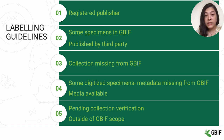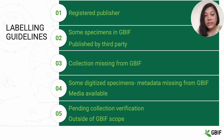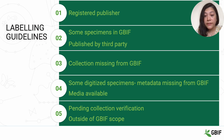Institutions are labeled as 'collection missing from GBIF' if they have not published any data in GBIF yet. However, if they have some data digitized at the institutional level that is not in GBIF, those are categorized as 'some digitized specimen metadata missing from GBIF.' If those digitized data also contain a media file such as an image, 'media available' is tagged. Lastly, institutions whose collections could not be verified online are labeled as 'pending collection verification,' and 'outside of GBIF scope' for those with collections other than species.